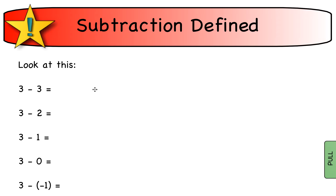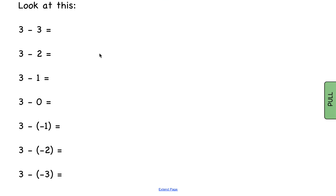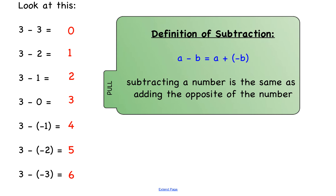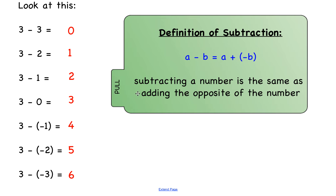Now let's look at subtraction. Fill out the table: 3 minus 3 is 0, 3 minus 2 is 1, 3 minus 1 is 2, 3 minus 0 is 3, 3 minus negative 1 is 4. The pattern to notice is that when you subtract a number, it's the same as adding the opposite. So 3 minus negative 1 is the same as 3 plus positive 1. Subtracting is the same as adding the opposite.